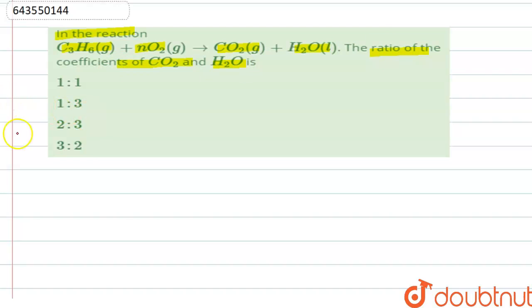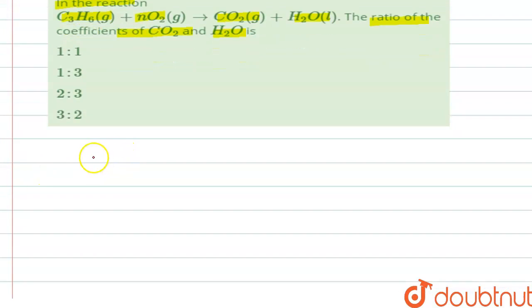To solve this, we have to first write the equation and balance it. So we have the equation: C3H6 gas plus NO2 gas gives CO2 gas plus H2O liquid.